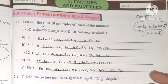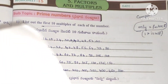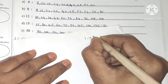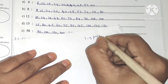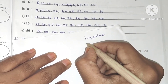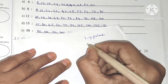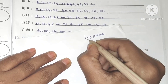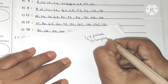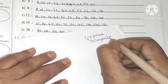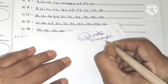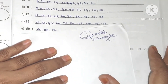So if you want to explain: 1 is not a prime number because it does not have 2 factors. Numbers with more than 2 factors are composite numbers. So 1 is neither prime nor composite.